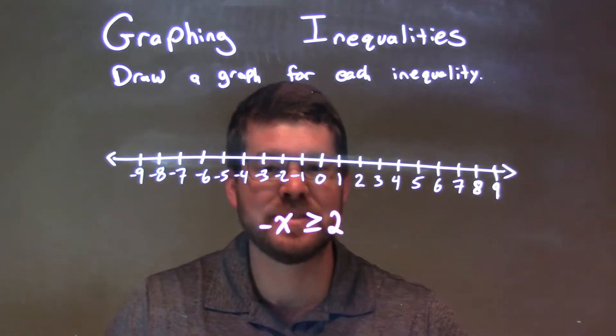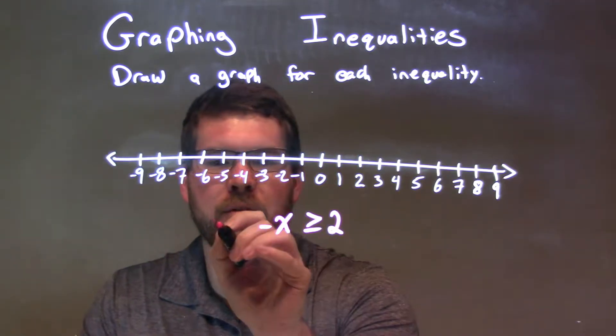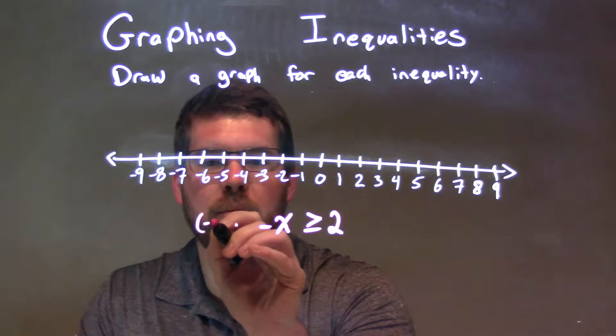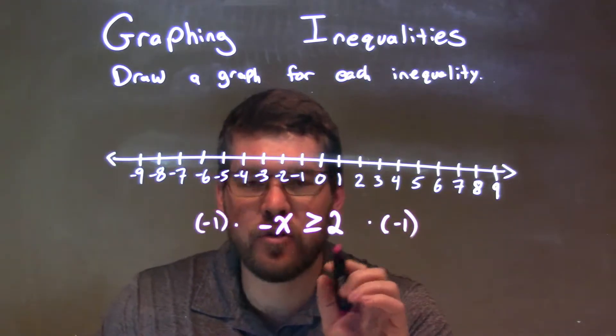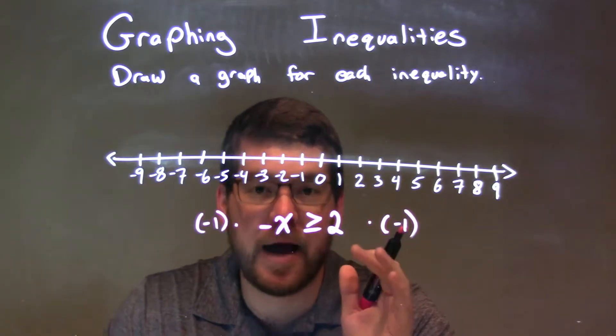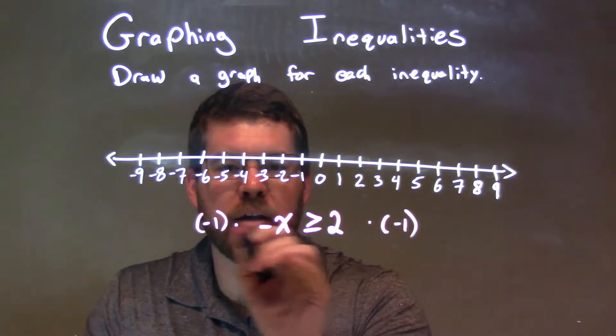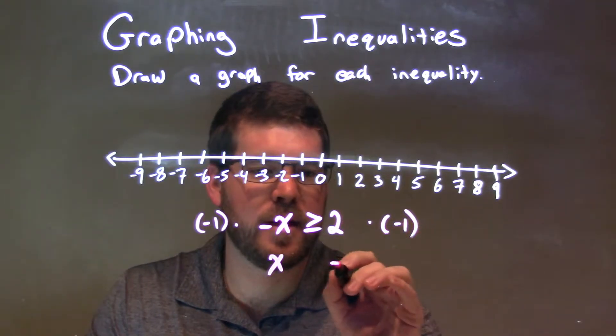What I need to do is multiply by negative 1 to both sides. That's going to get rid of the negative in front of the x. I want x to be by itself. So negative 1 times x is x, and 2 times negative 1 is negative 2.